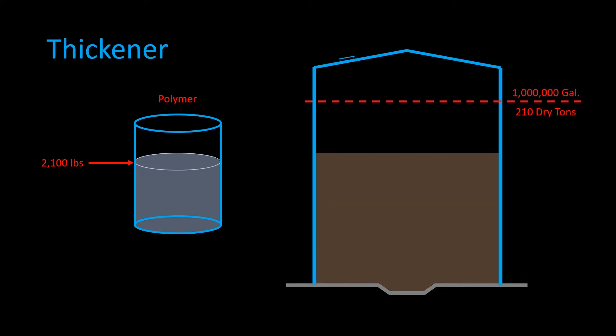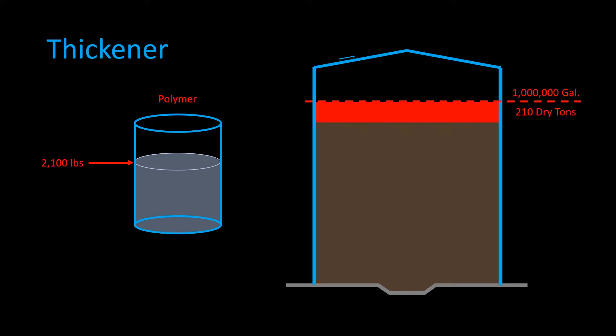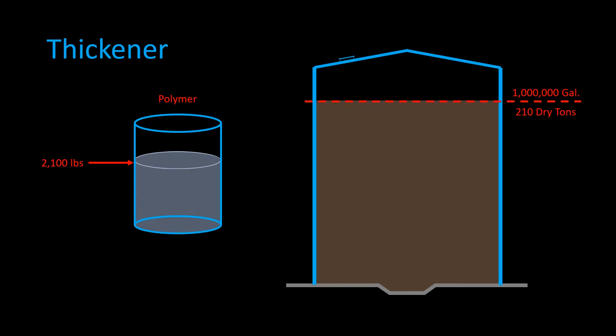However, if we treat 210 tons of solids in a thickener with a 95% capture rate and use 2,100 pounds of polymer to do so, as per the math, we only get 199 tons out — which is 950,000 gallons — and our digester hasn't been filled. We'll have to treat another 11 tons of solids to top it off. So in reality, it cost us 2,210 pounds of polymer — an additional 110 pounds of polymer to reach the desired amount of sludge. With the cost of polymer, that's a pretty sizable math error.